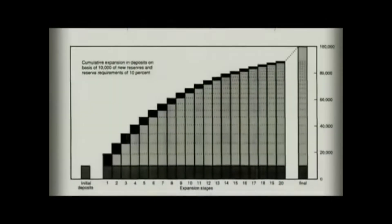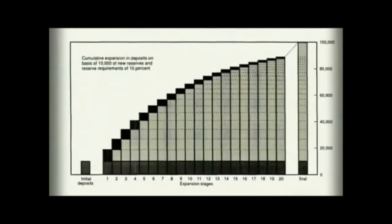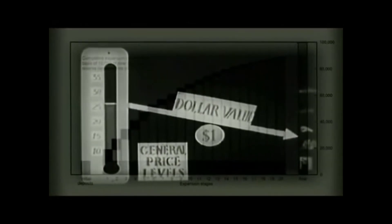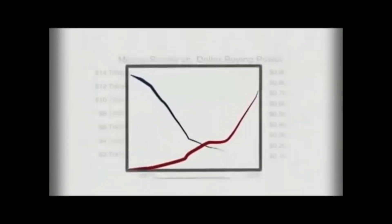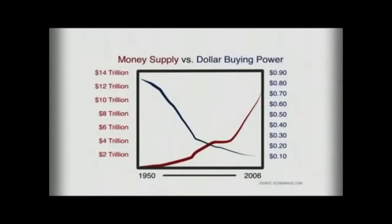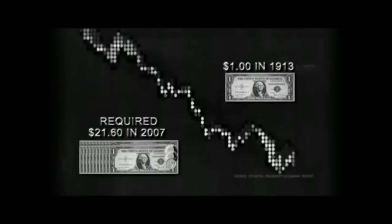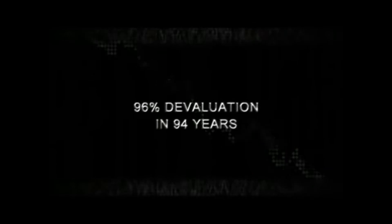The fractional reserve system of monetary expansion is inherently inflationary. For the act of expanding the money supply without there being a proportional expansion of goods and services in the economy will always debase a currency. In fact, a quick glance at the historical values of the US dollar versus the money supply reflects this point definitively, for the inverse relationship is obvious. One dollar in 1913 required $21.60 in 2007 to match value. That is a 96% devaluation since the Federal Reserve came into existence.